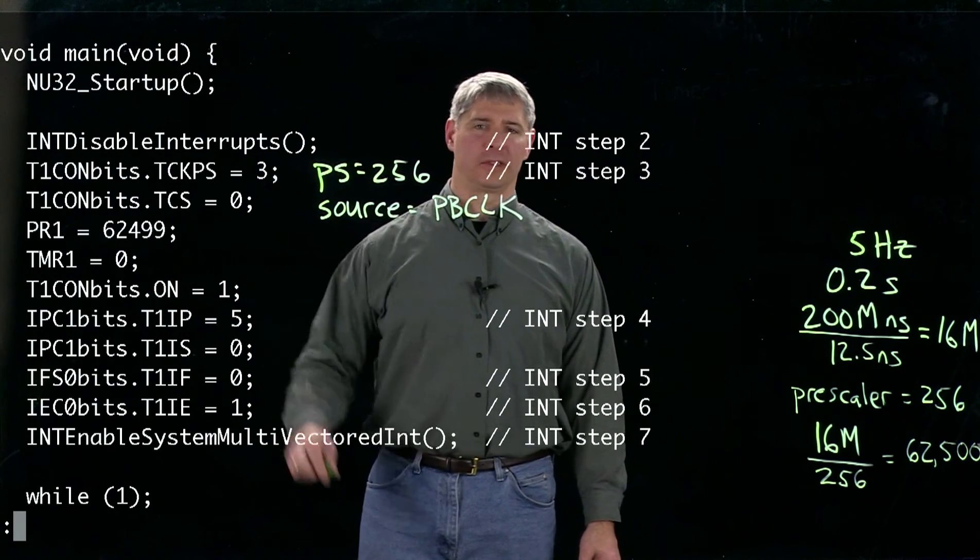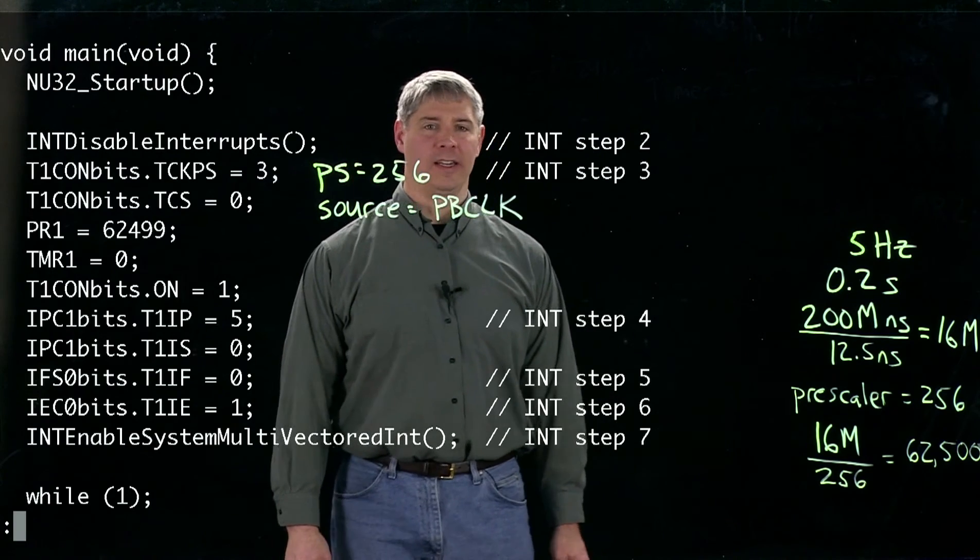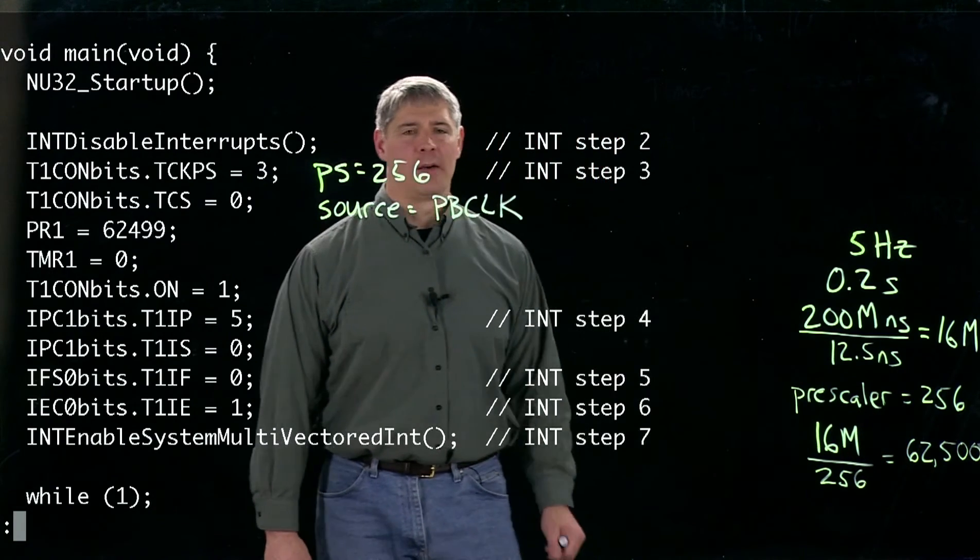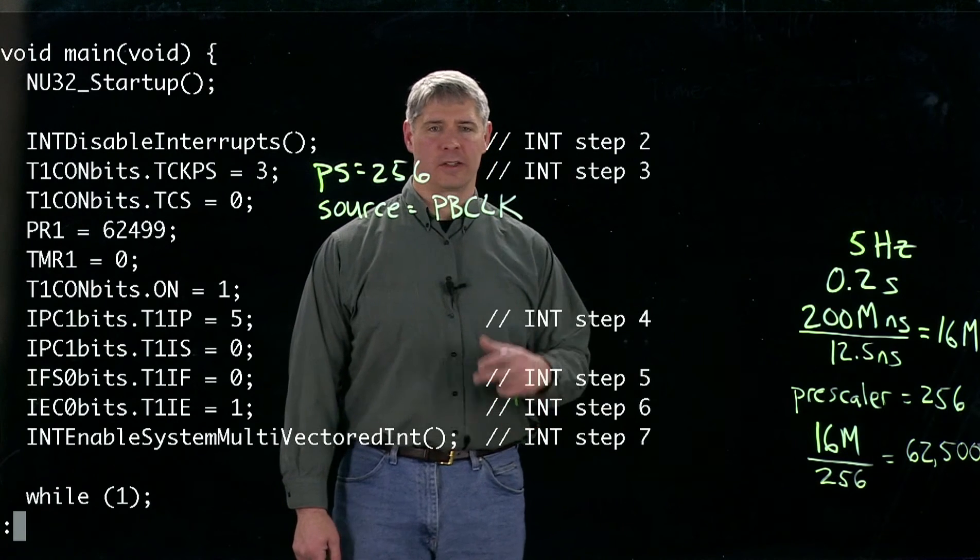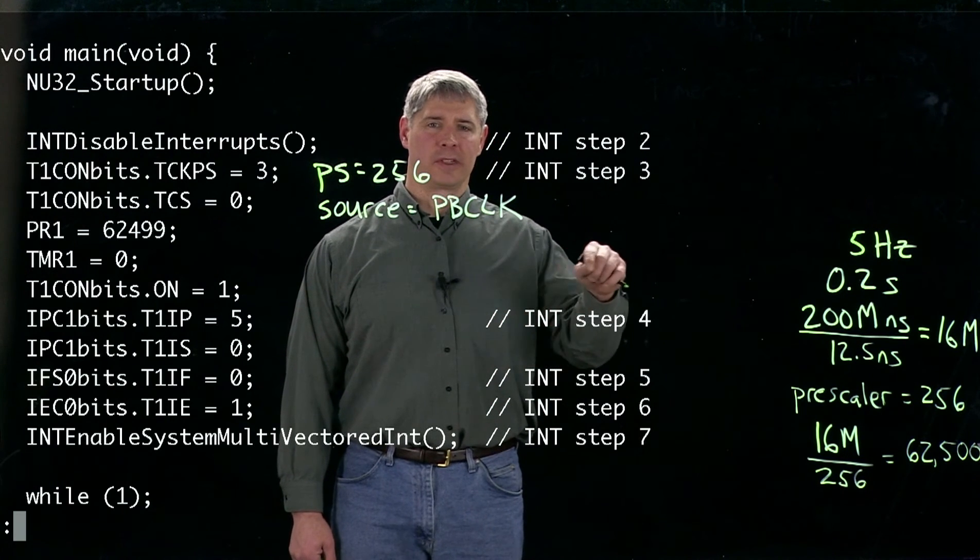set the period register equal to 62,499. Now we calculated 62,500. Remember, the count starts at zero, so we count from zero, we go up to 62,499.